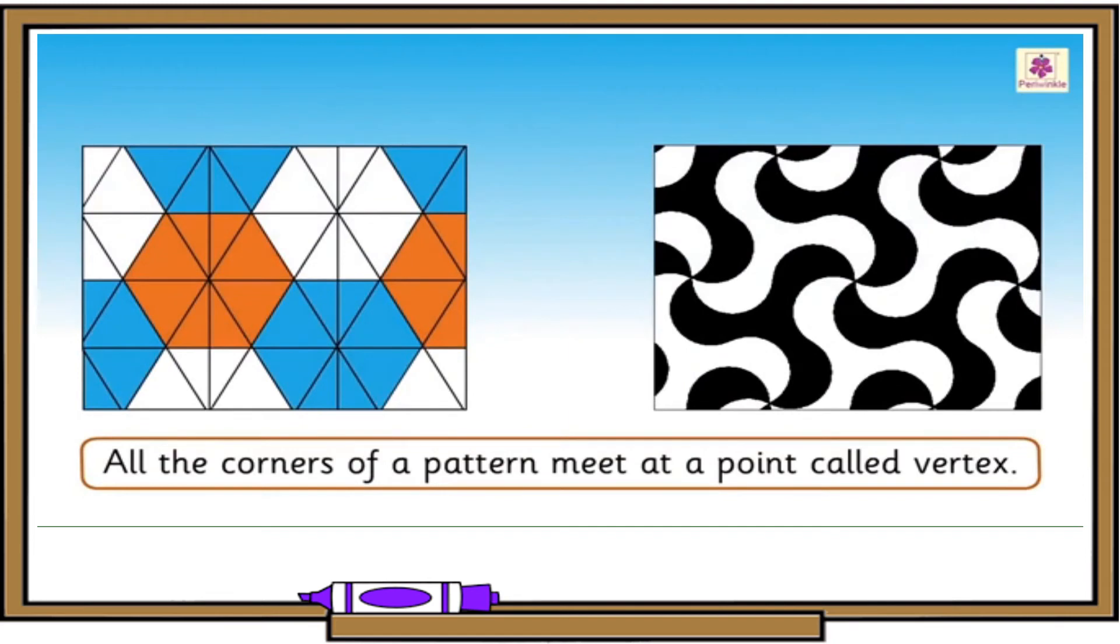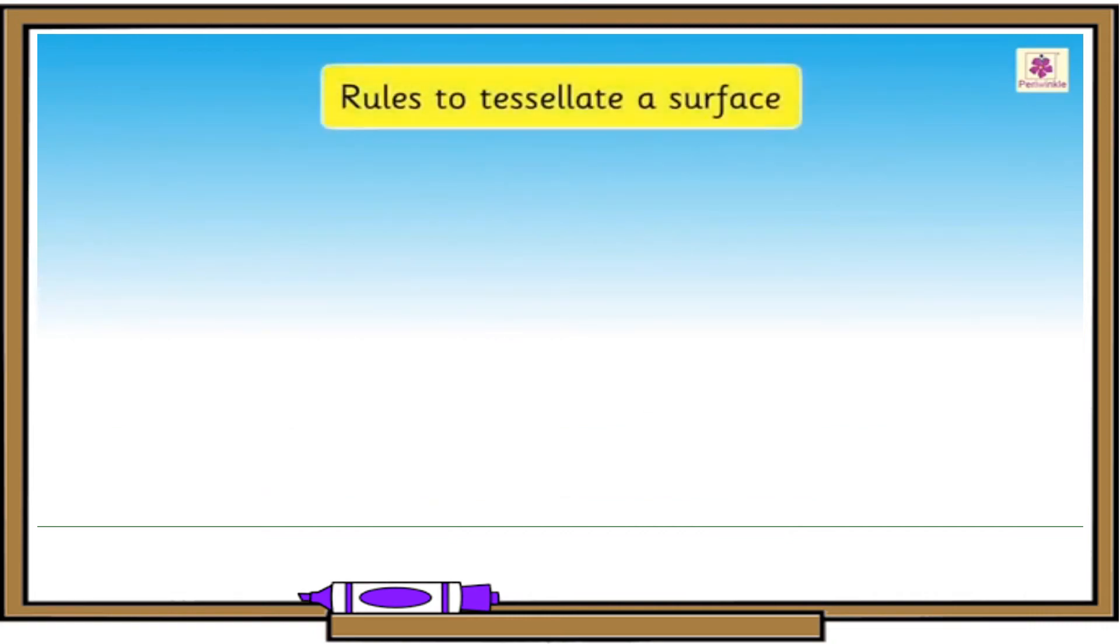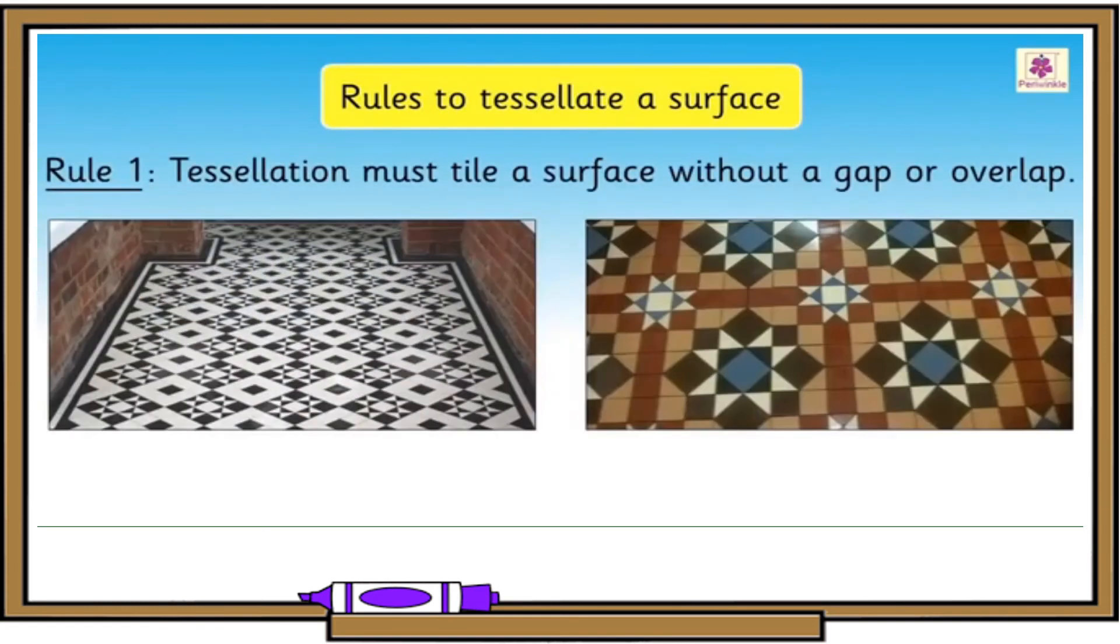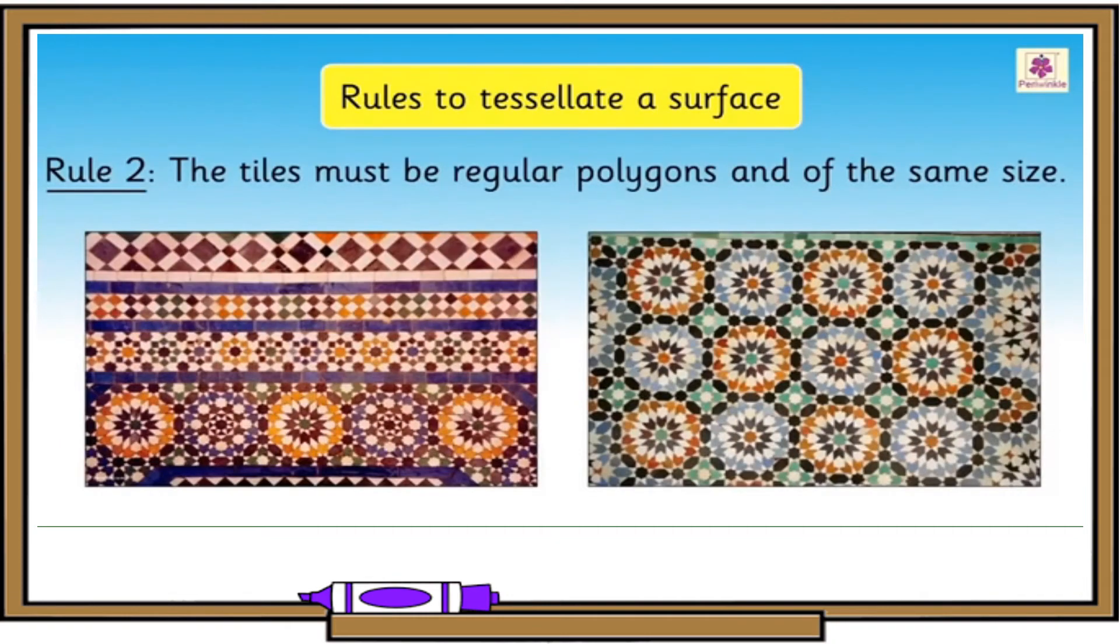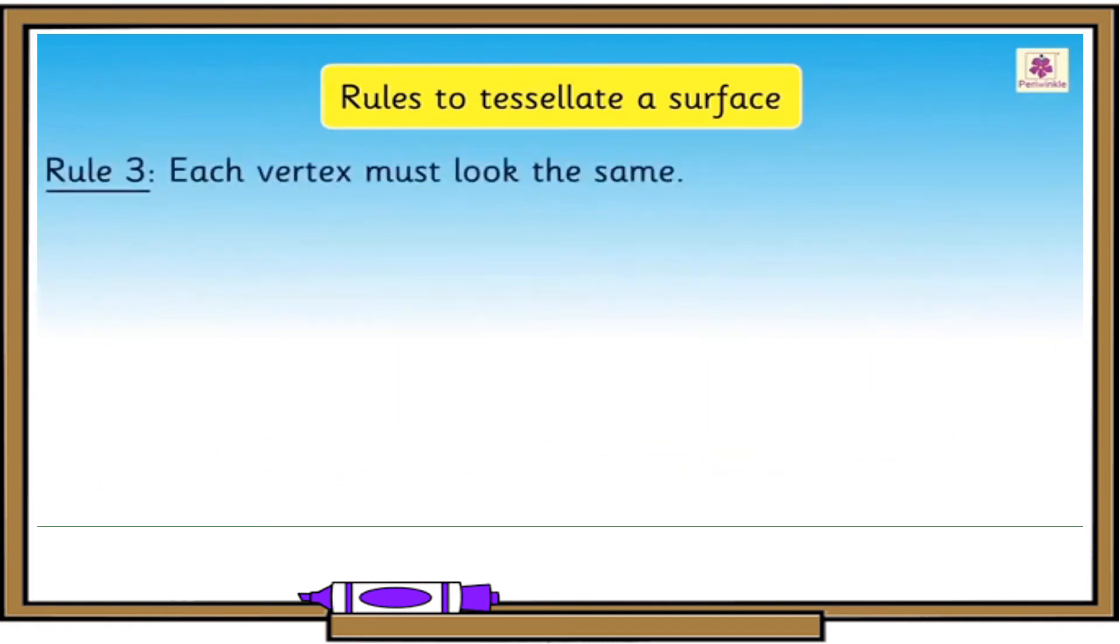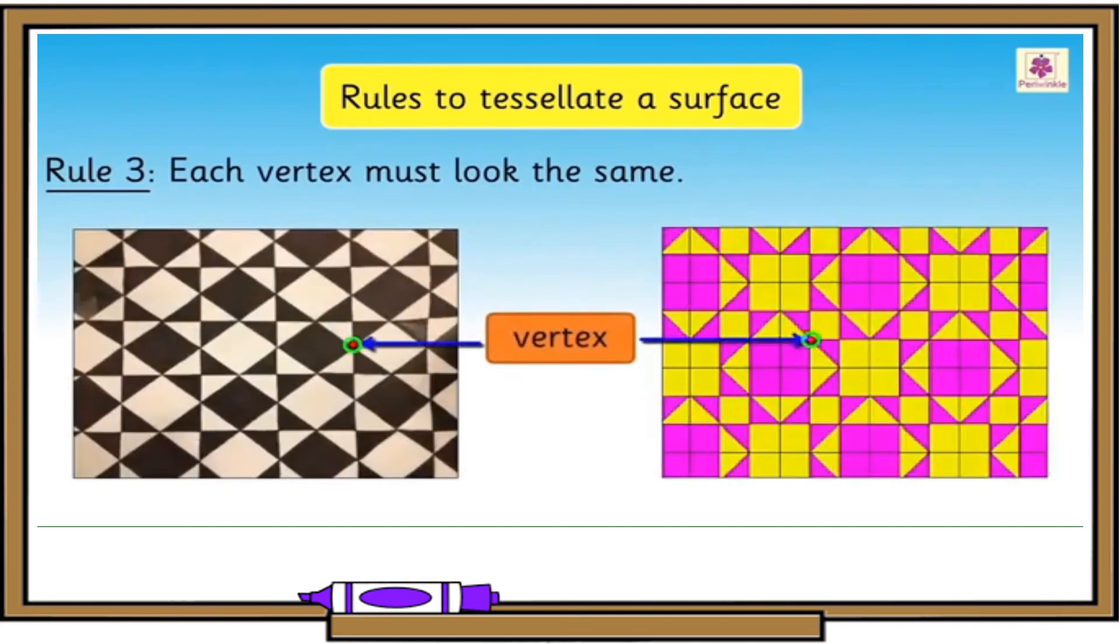All the corners of a pattern meet at a point called vertex. Did you know we follow certain rules to tessellate a surface? They are Rule 1: Tessellation must tile a surface without a gap or overlap. Rule 2: The tiles must be regular polygons and of the same size. Rule 3: Each vertex must look the same.